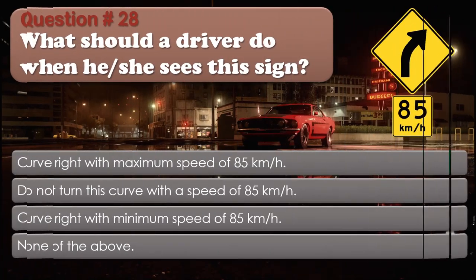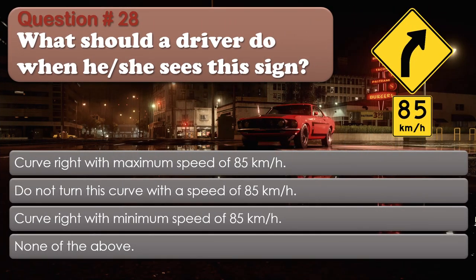Question number 28. What should a driver do when he or she sees this sign? Curve right with maximum speed of 85 km per hour. Do not turn this curve with a speed of 85 km per hour. Curve right with minimum speed of 85 km per hour. None of the above. The correct answer is: Curve right with maximum speed of 85 km per hour.